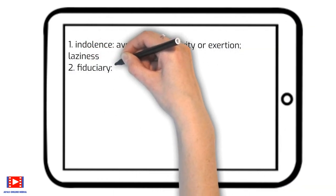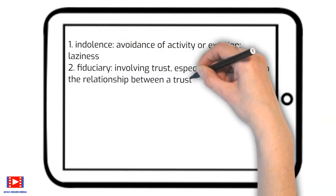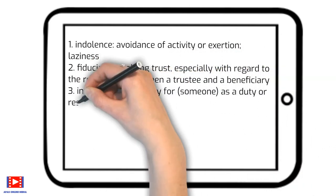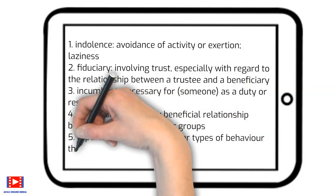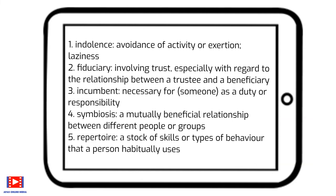Let's summarize the five new words we have learned today. 1. Indolence: avoidance of activity or exertion, laziness. 2. Fiduciary: involving trust especially with regard to the relationship between a trustee and a beneficiary. 3. Incumbent: necessary for someone as a duty or responsibility. 4. Symbiosis: a mutually beneficial relationship between different people or groups. 5. Repertoire: a stock of skills or types of behavior that a person habitually uses.